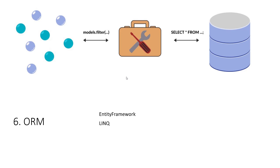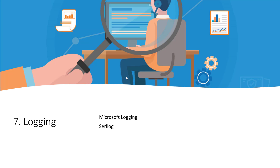Number six is ORM — that is Entity Framework and LINQ. We will also cover Dapper in this course. Entity Framework Core is covered with ASP.NET Core, and you'll learn about LINQ — Language Integrated Query.